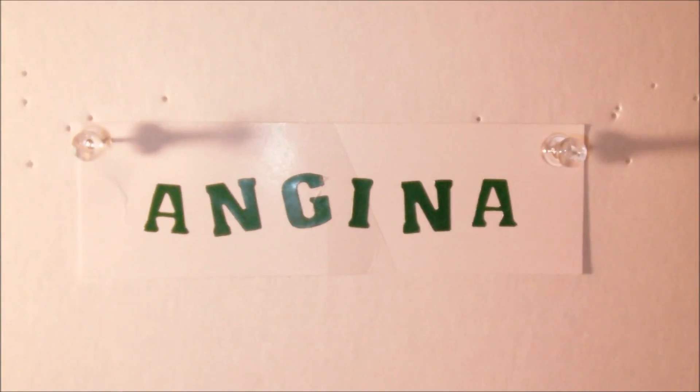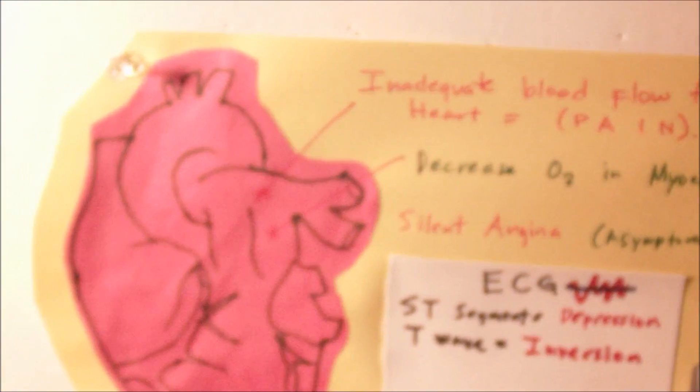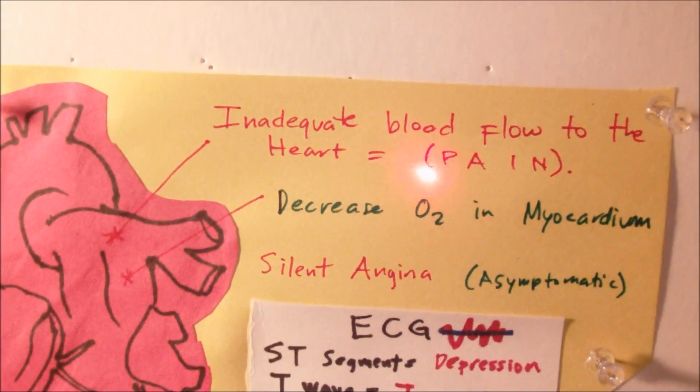Let's talk about angina pectoris or angina. Basically, angina pectoris is pain caused by inadequate blood flow to the heart. It's also due to a decrease of oxygen specifically in the myocardium.